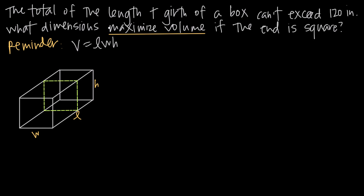We go back to the problem for additional information. One thing we can identify to eliminate a variable: we've been told that the end of the box is a square. So if we look at the end, it's a square, which means all four sides are equal. The bottom is defined by the width and the side by the height, so because the end is a square, width must equal height. Substituting into the volume formula gives us V = L × w².